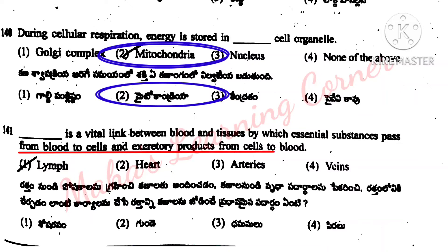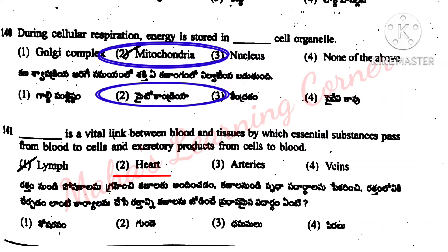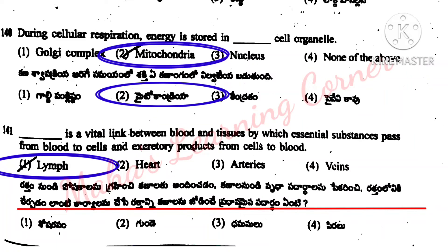Dash is a vital link between blood and tissues by which essential substances pass from blood to cells and excretory products from cells to blood. Options: lymph, heart, arteries, veins. Correct answer is option 1: lymph.